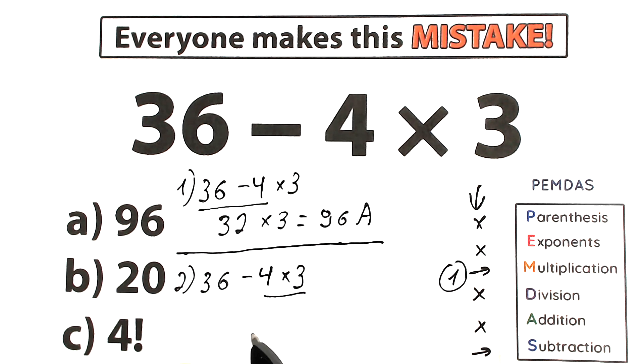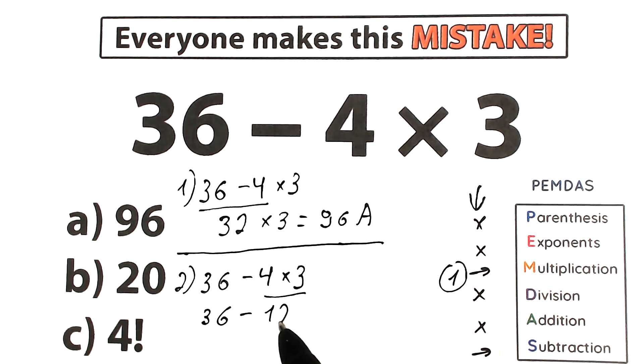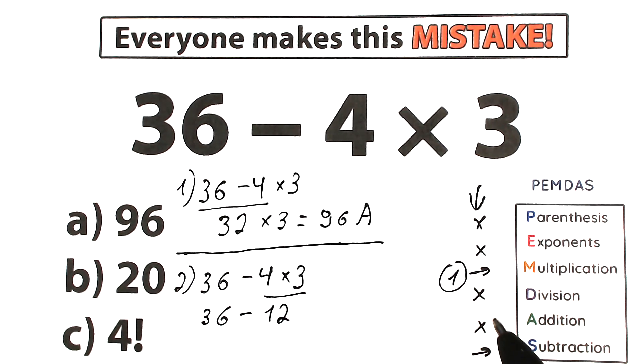We should multiply 4 times 3. We have 36 minus 12. We complete our first step. Multiplication. Pretty easy, pretty basic.